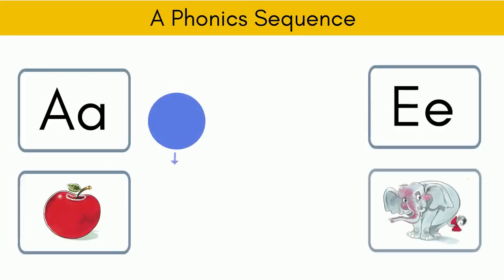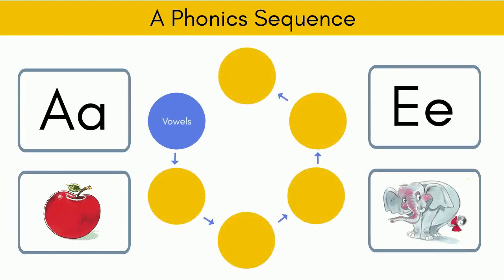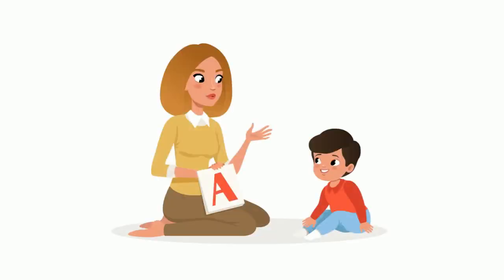I think the logical starting point in a phonics sequence is with the basic short vowels. The vowels form the foundation of the pronunciation of words, and when children read and write words using a phonic approach, the easiest way to do this is by using vowels as the basic building block.